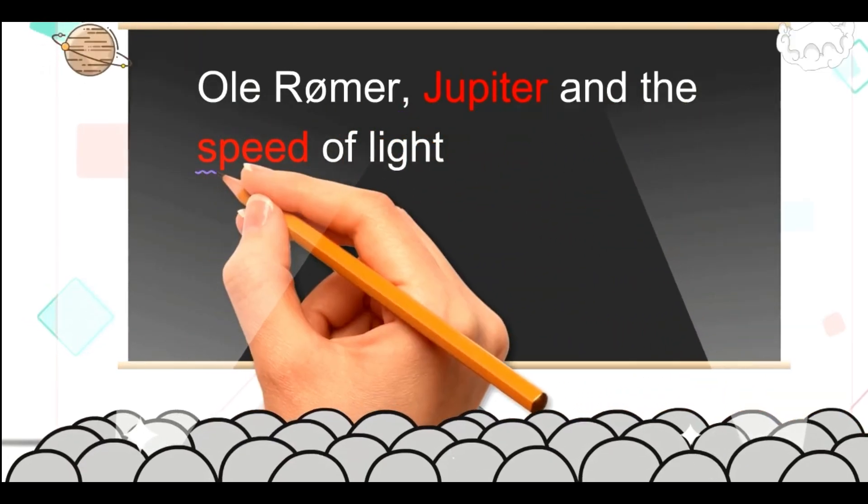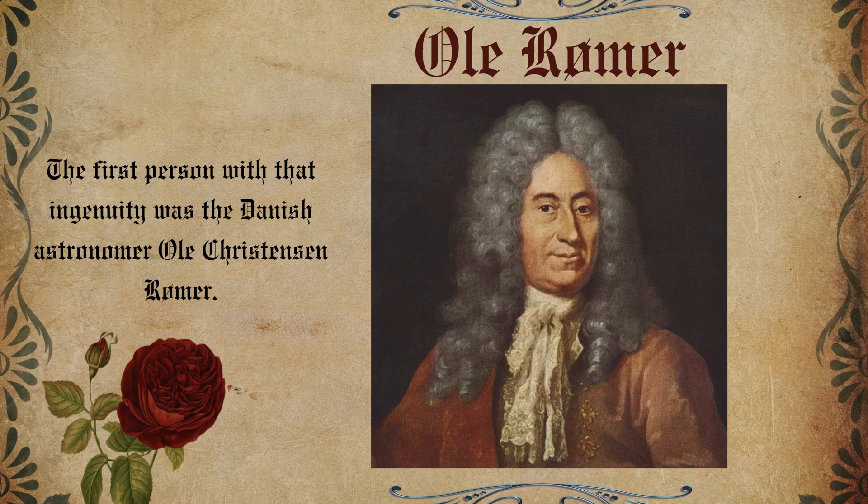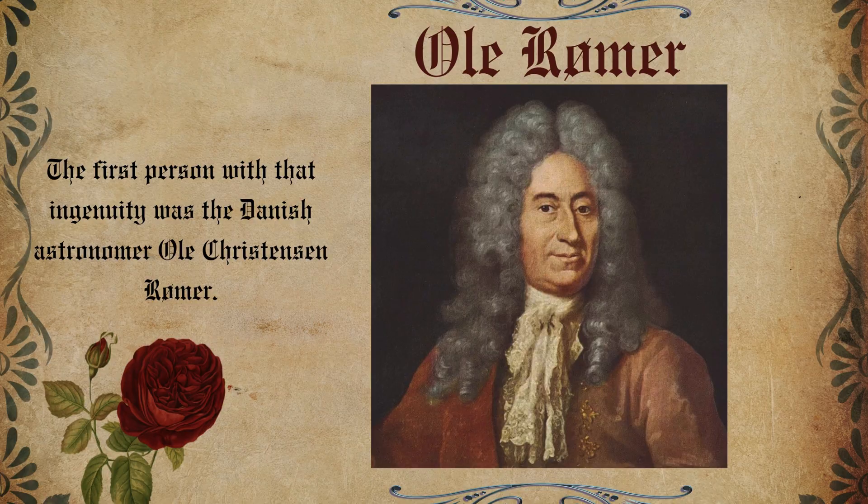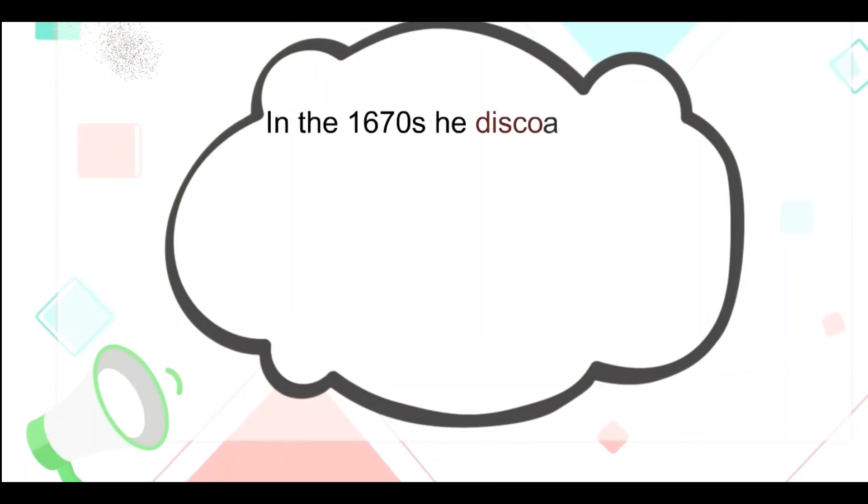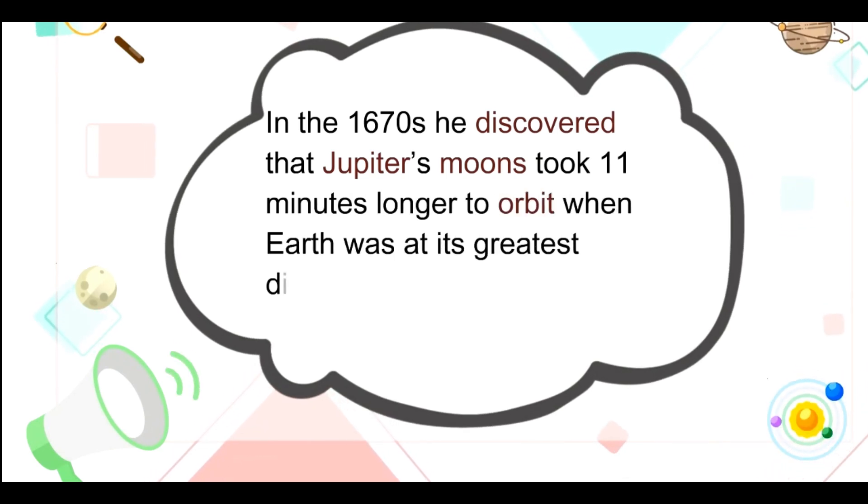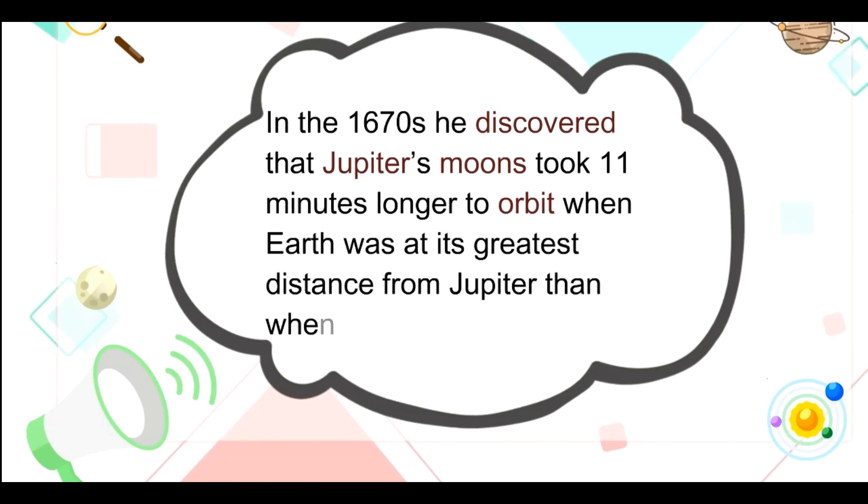Ola Römer, Jupiter and the Speed of Light. In the 1670s, he discovered that Jupiter's moons took 11 minutes longer to orbit when Earth was at its greatest distance from Jupiter than when it was at its closest.